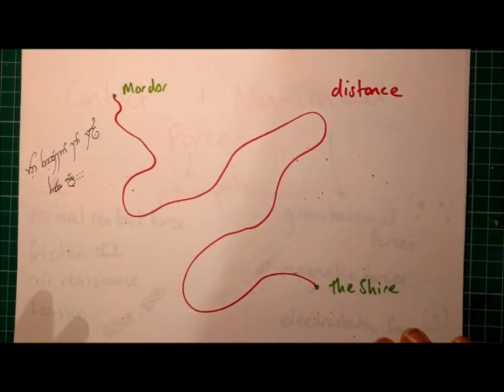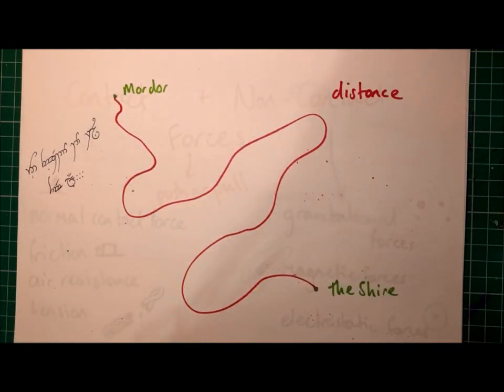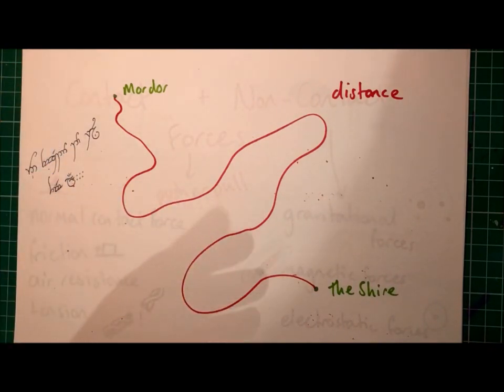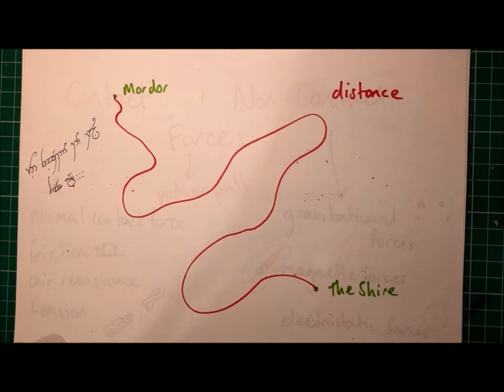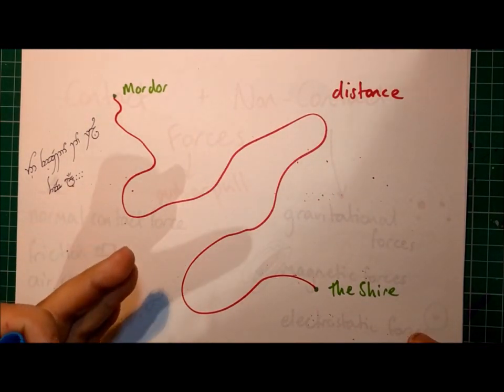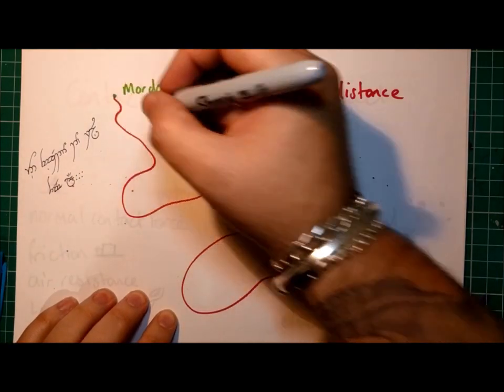Okay, so distance versus displacement. What I have here is essentially the short version of Lord of the Rings. So we know they start off in the Shire, and they go a few places and end up at Mordor. Now the red line here represents the distance that they travelled. But that's not the same thing as their displacement. Now their displacement is the straight line distance from where they started to where they ended up.